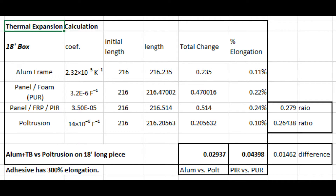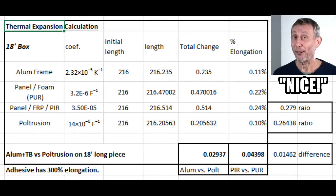As it turns out, the higher-density PIR insulation is dimensionally stable, having a near-identical expansion rate as the aluminum extrusion thermal break frame that it is attached to, as well as the laminates and sub-laminates that seal the rigid PIR foam insulation.